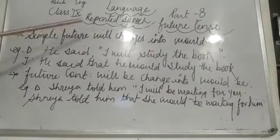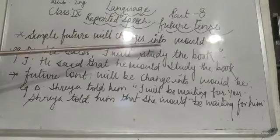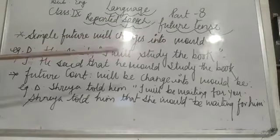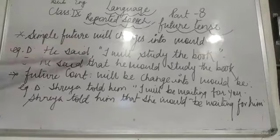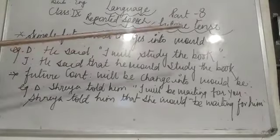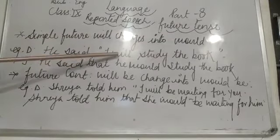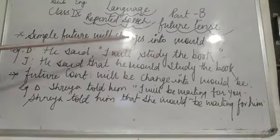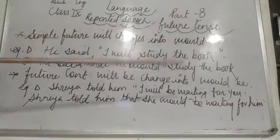Simple future 'will' changes into 'would.' For example, he said, 'I will study the book.' When we change this into an indirect sentence, it becomes: he said that he would study the book. As you can observe, 'will' has been changed into 'would.'